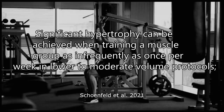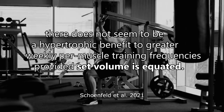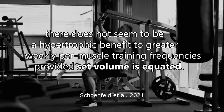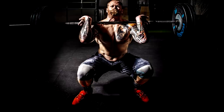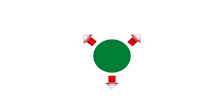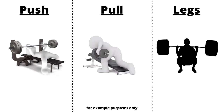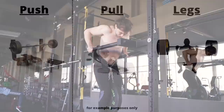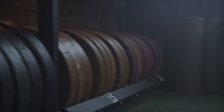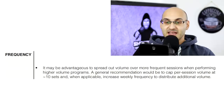On frequency: significant hypertrophy can be achieved when training a muscle group as infrequently as once per week in lower to moderate volume protocols. There does not seem to be a hypertrophic benefit to greater weekly per-muscle training frequencies, provided set volume is equated. If training less frequently, it is beneficial to use compound movements — bench press, squat, military press. Load, volume, and frequency are all connected in how you program them. A general recommendation would be to cap per-session volume at 10 sets and increase weekly frequency to distribute additional volume when applicable.